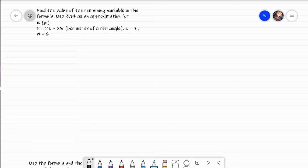This first problem says to find the value of the remaining variable in the formula. That's technically saying to solve for the unknown variable. We will use 3.14 as an approximation for pi, which is that little symbol right there. It tells me that P equals 2L plus 2W. Our perimeter is going to equal 2 times the length, and then plus 2 times the width. It tells me my L is 7 and my W is 6.